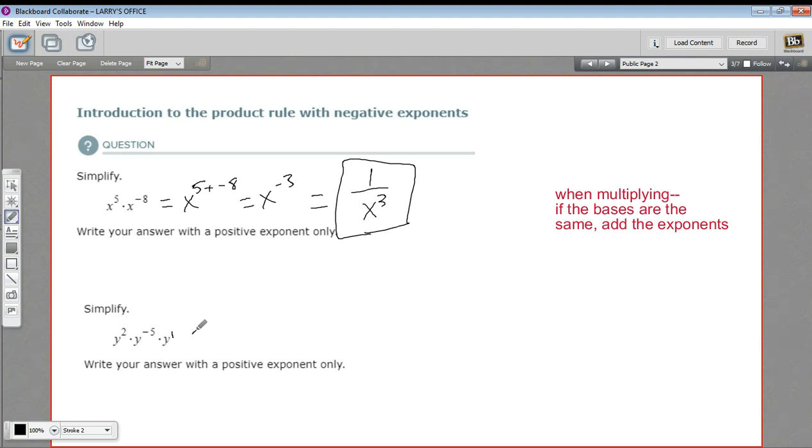So this problem would be y to the two plus a negative five plus one power. Well, two plus a negative five, two minus five would be negative three plus one. So that comes out to be a negative two.